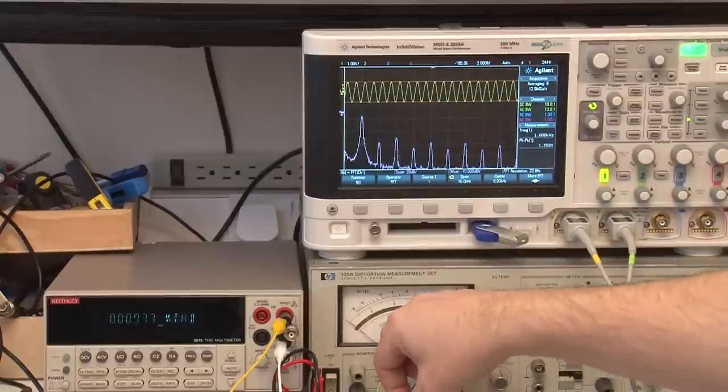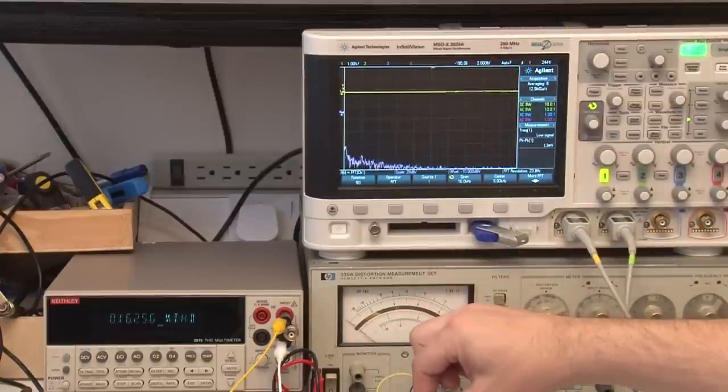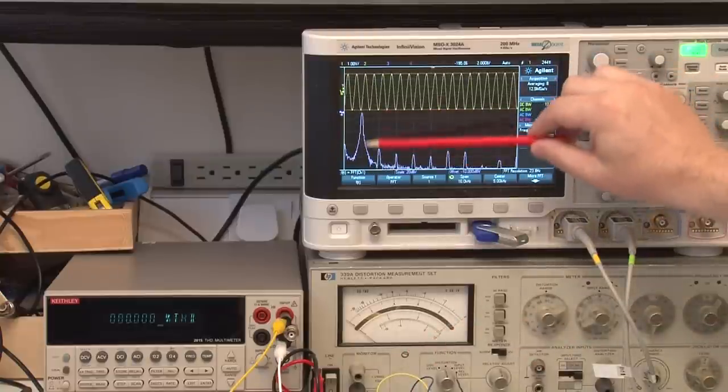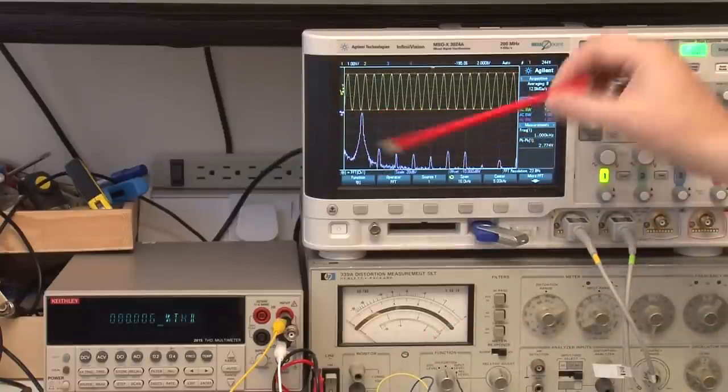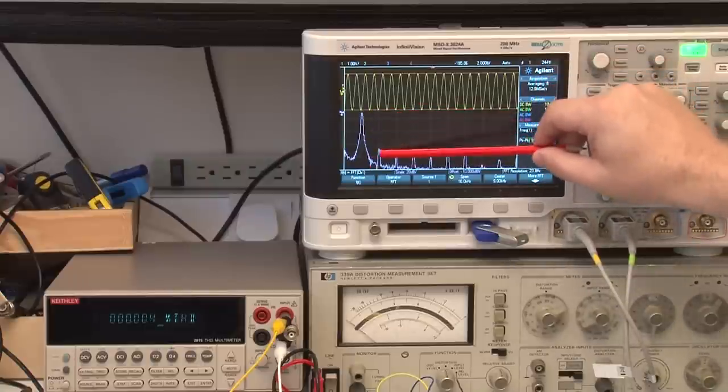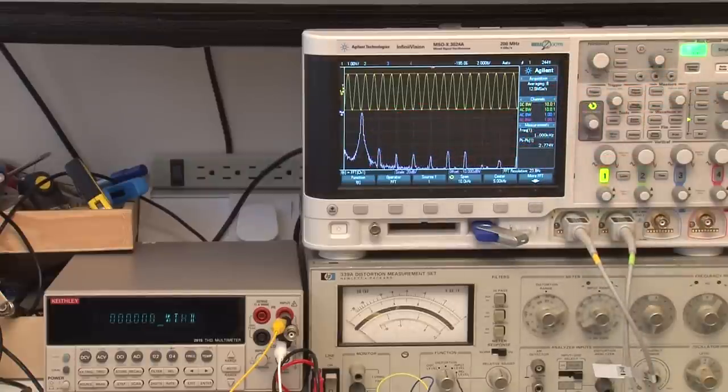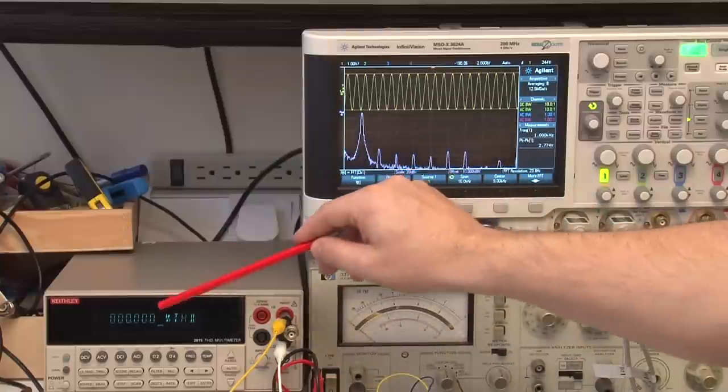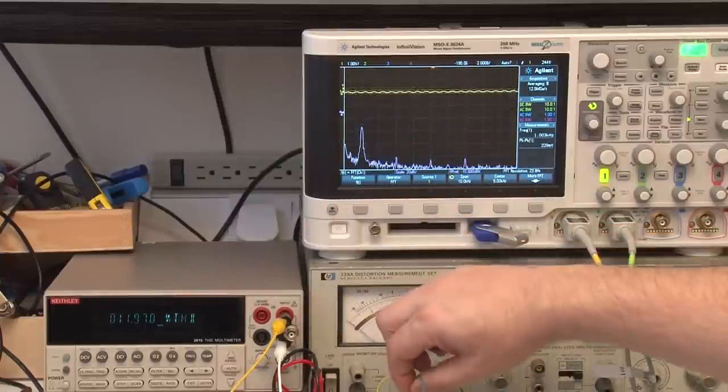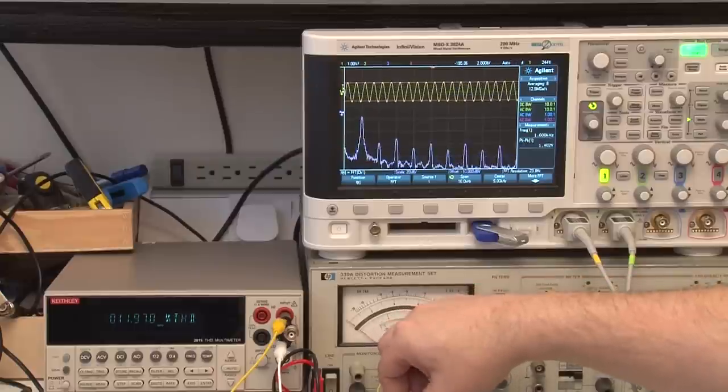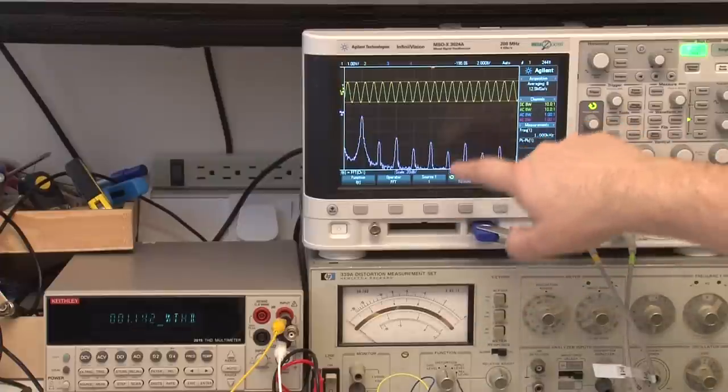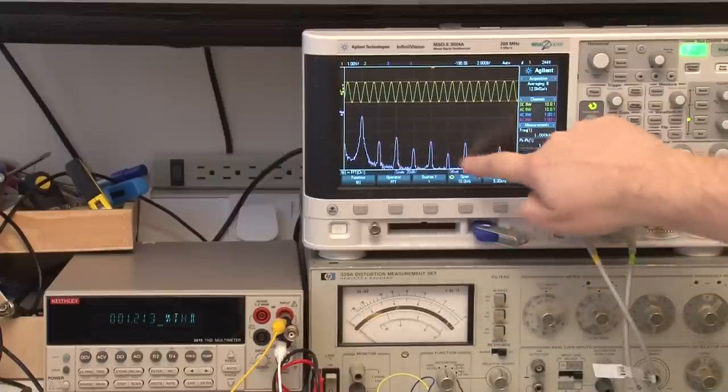If we switch back to the input source, and have a look at that, you can see in order of magnitude, and bear in mind this is DBM, so this is a logarithmic scale here, so in order of magnitude, these are much, much, much smaller, but as soon as you've, resulting a very low distortion reading, if we revert back to the output of the stage, you'll see that the harmonic content here is significantly higher.